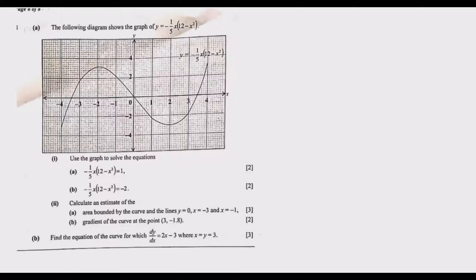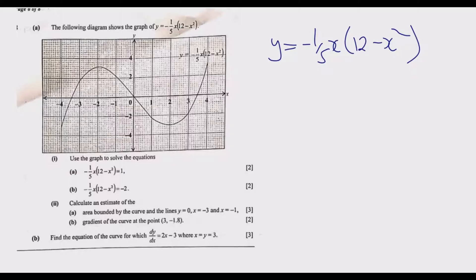What the question is asking us to do is solve the equations using the graph, not the normal algebraic way. The first part sets -1/5 · x(12 - x²) equal to 1. The left-hand side is the original function y = -1/5 · x(12 - x²), and the right-hand side gives us a second function y = 1. We need to find where these two functions are equal — that is what we are required to solve for.